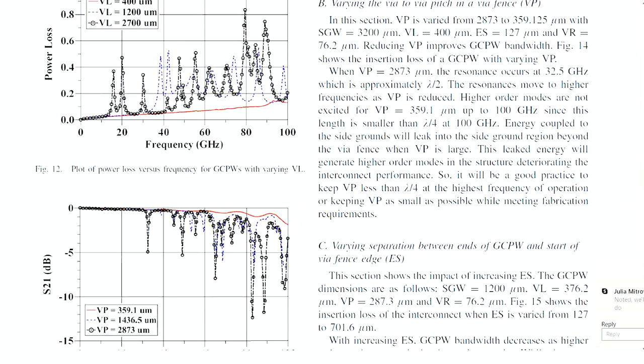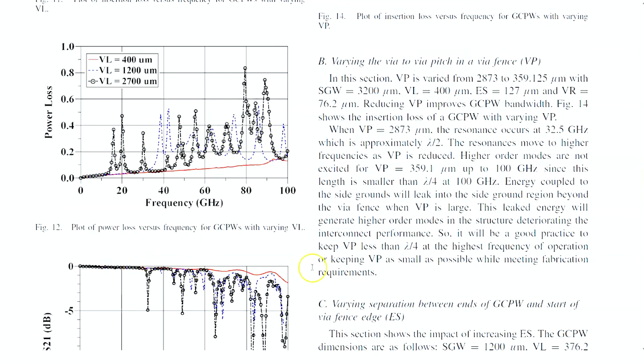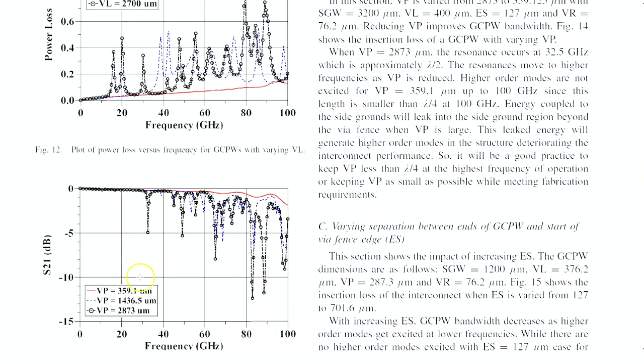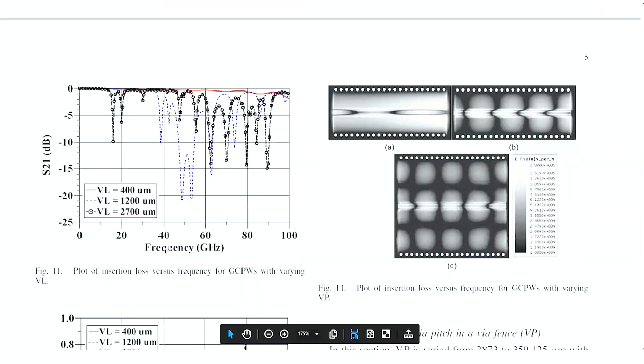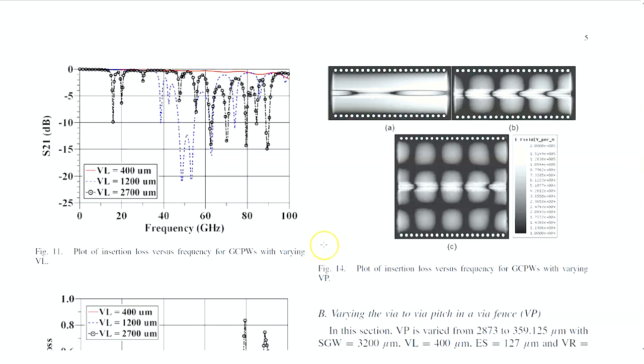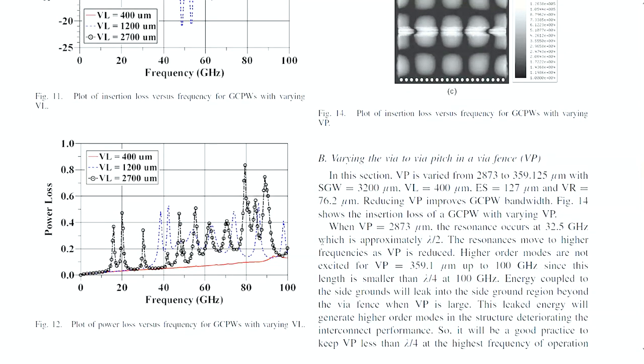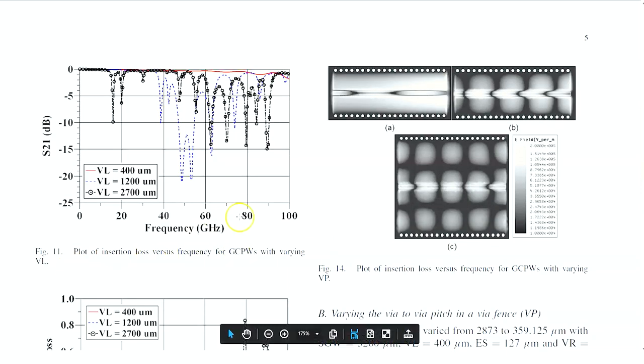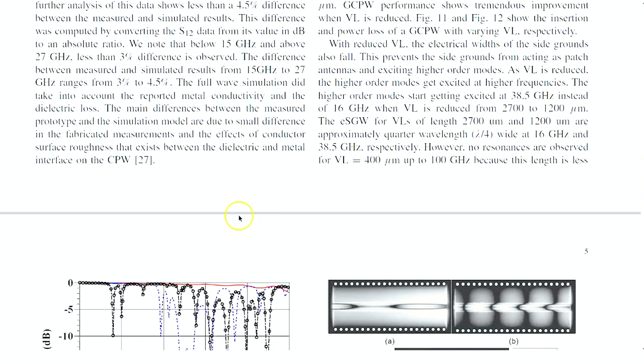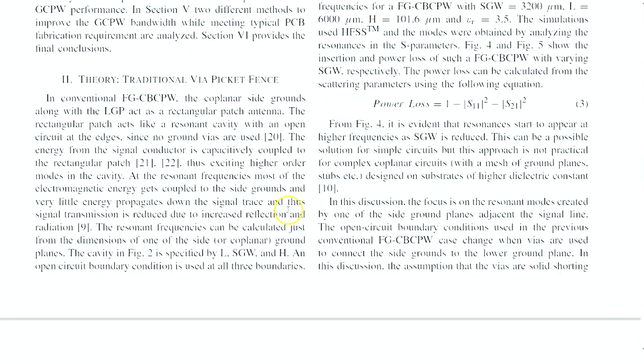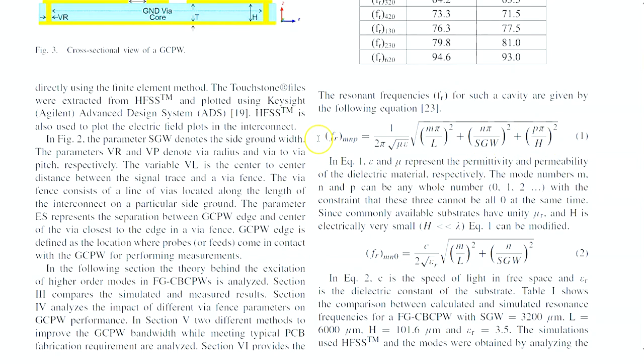So just as a general rule, if we want to ensure that we have the maximum bandwidth available for our particular interconnect, then we would like to make VP and VL as small as we possibly can. Now, that's going to be subject to some manufacturability limitations. Obviously, if the vias are too close together, then the hole-to-hole separation is too small to be reliably drilled. And then there's a risk of overlapping drill hits. But just as a general rule, what's going on here is you're actually changing the value of the resonances. And if you want to approximate the cavity as essentially just a rectangular box, you would use a formula kind of like this. And essentially, you can see here as you make any of these values smaller, you make any one of these F values much larger.